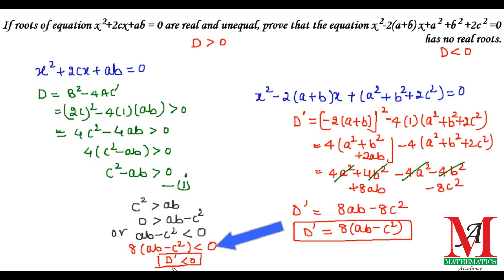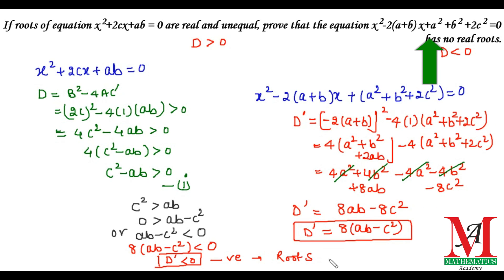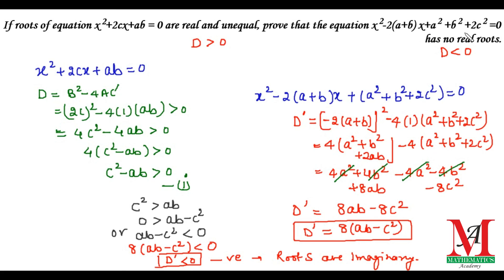Since D' is less than 0, the discriminant is negative, which means the roots are imaginary (non-real). Therefore, we have proved that if the roots of the first equation are real and unequal, then the second equation has no real roots. Thank you.